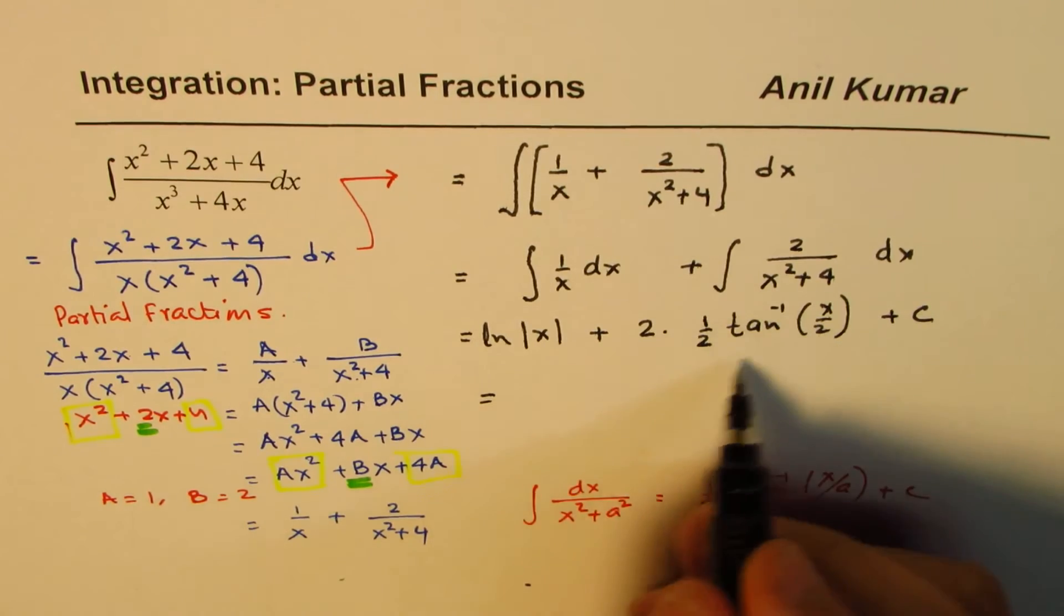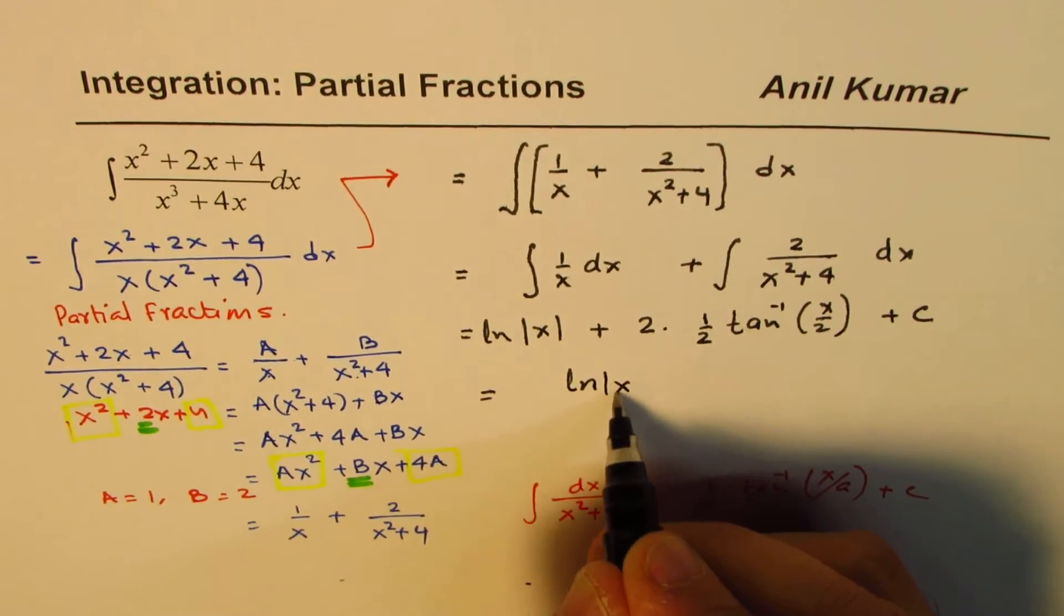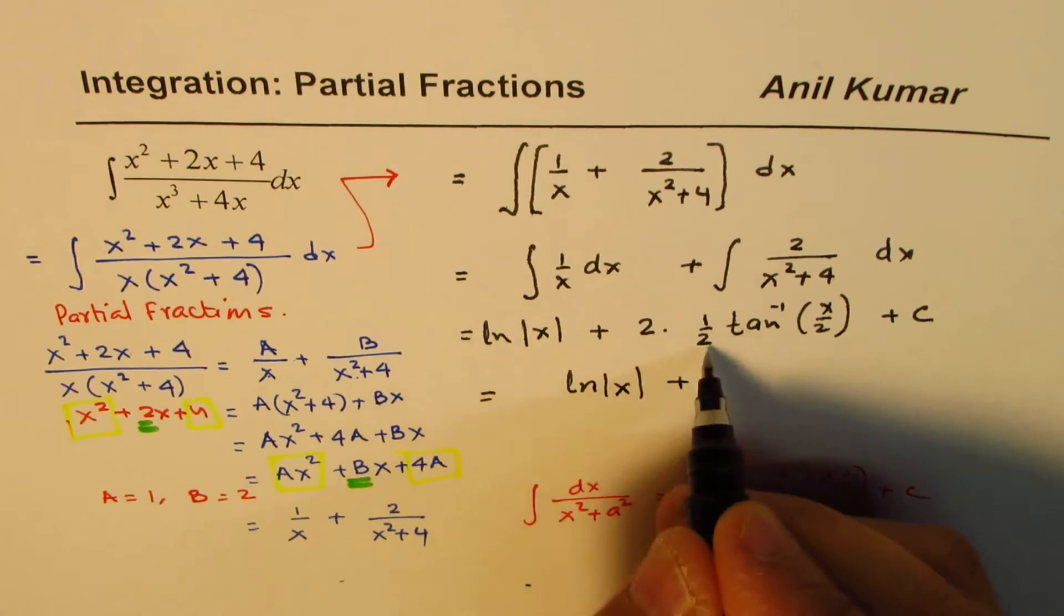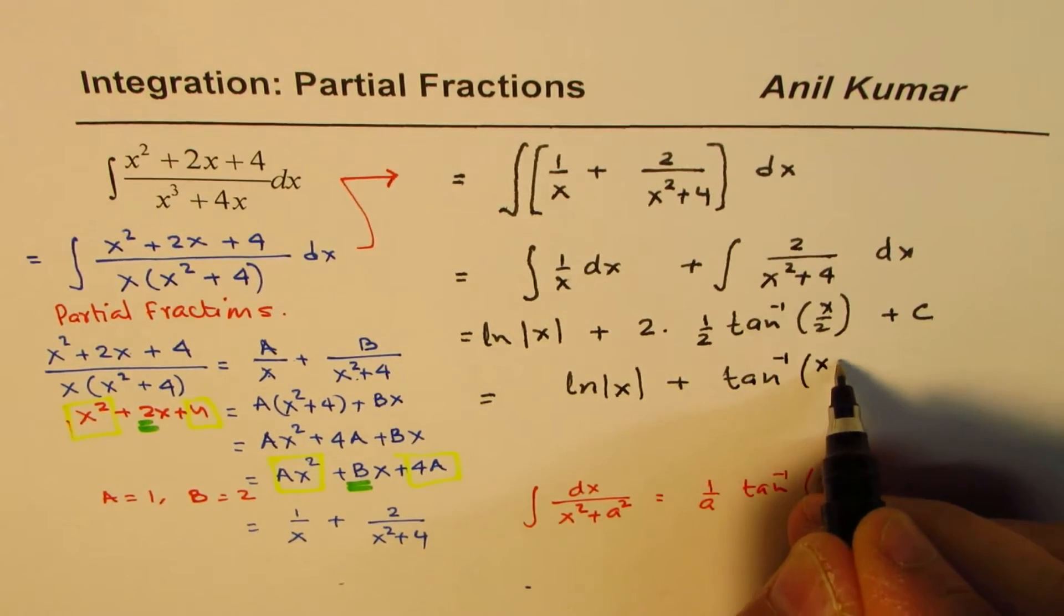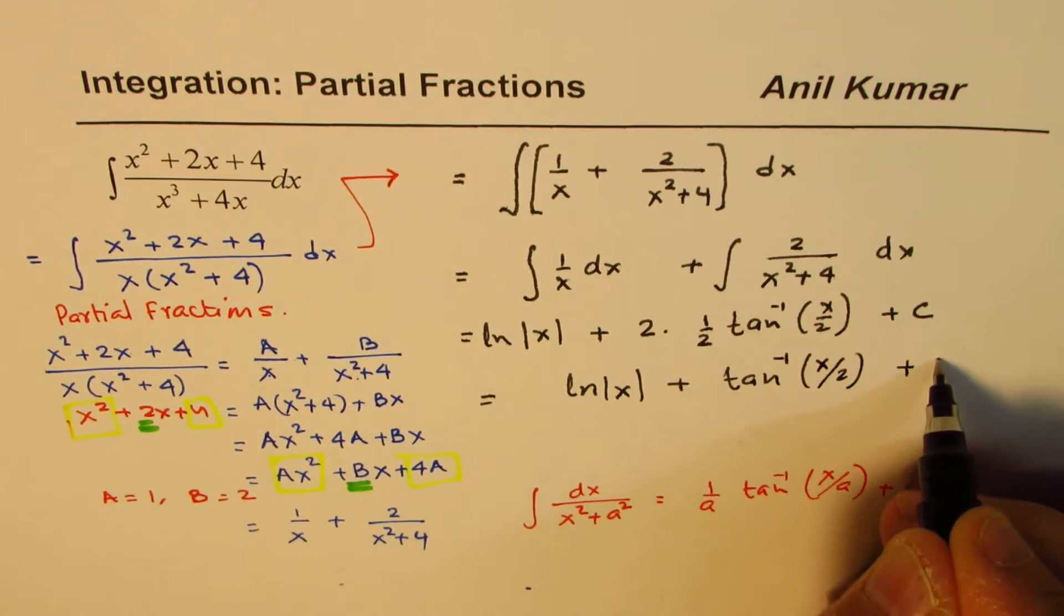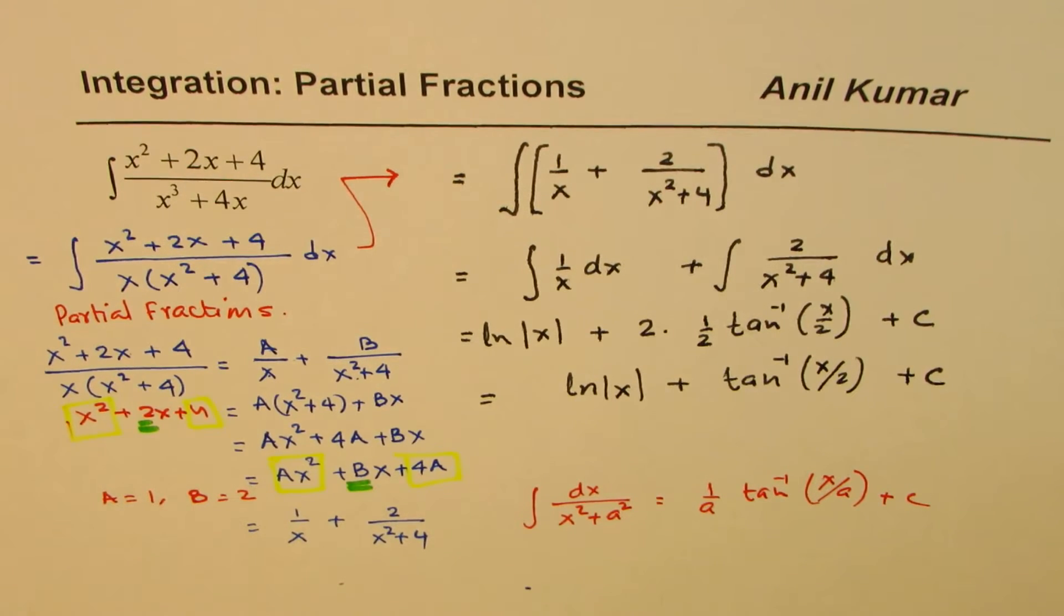ln of x plus 2 and 2 cancels, so we have tan inverse of x over 2 plus C. So that is the solution for the given question.